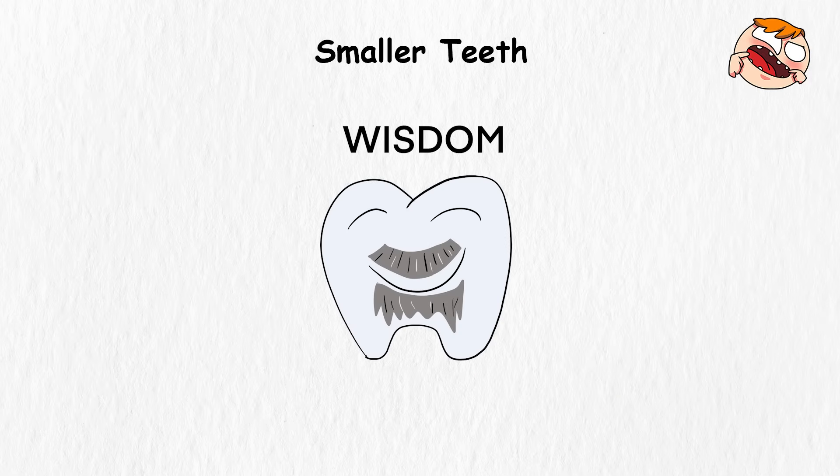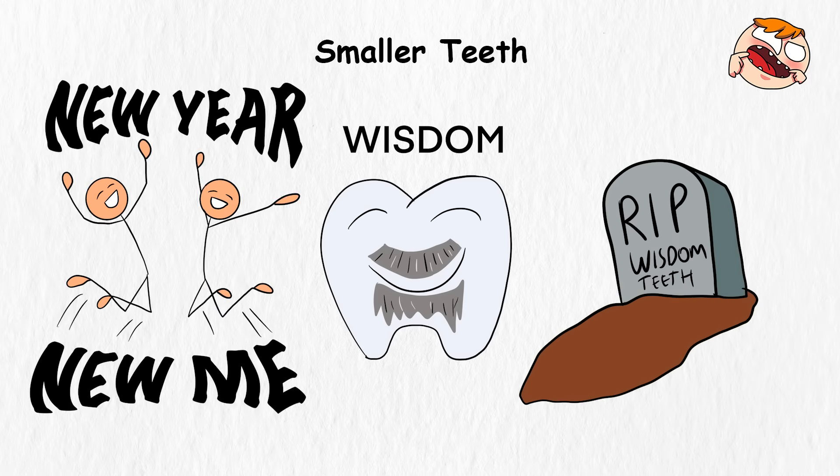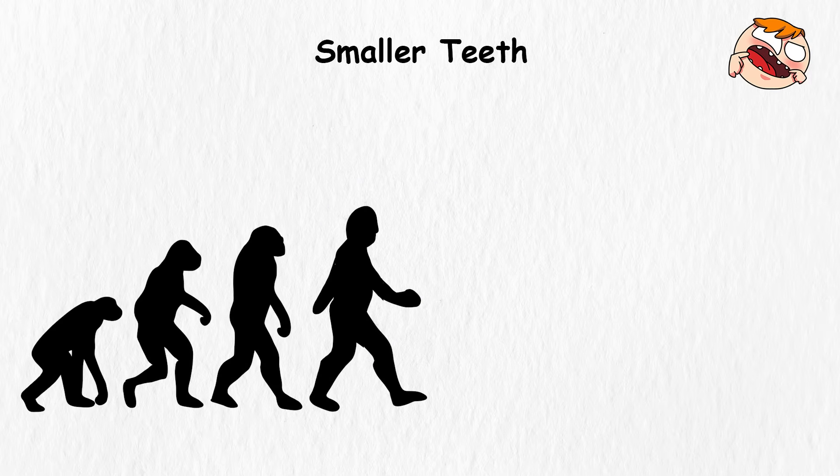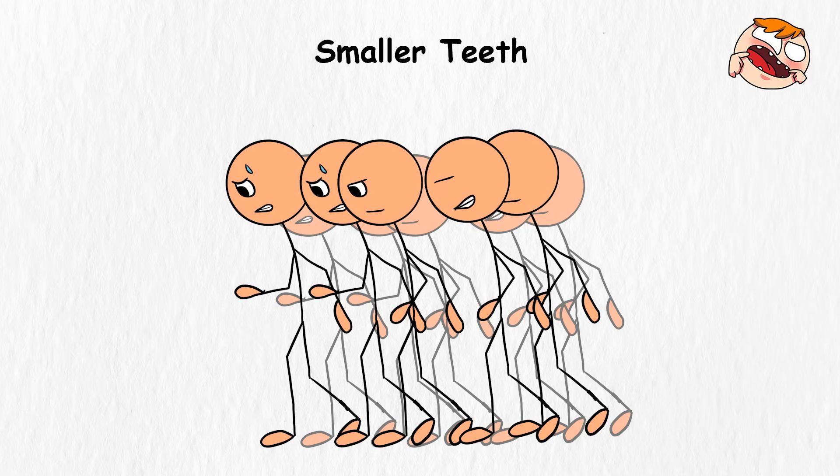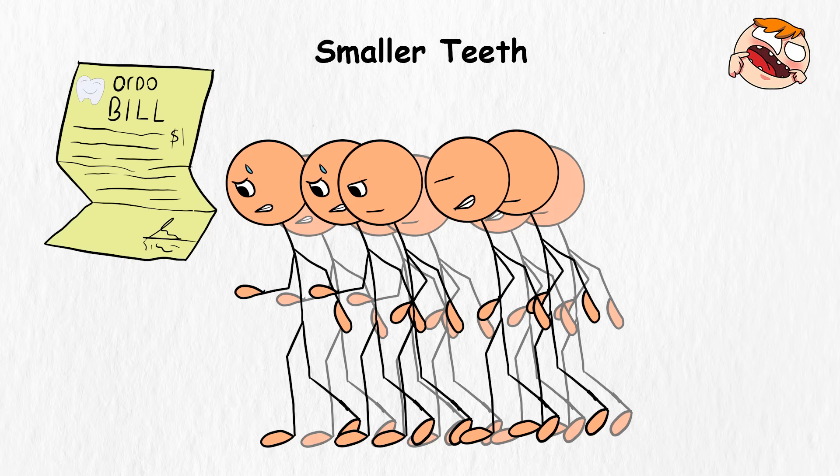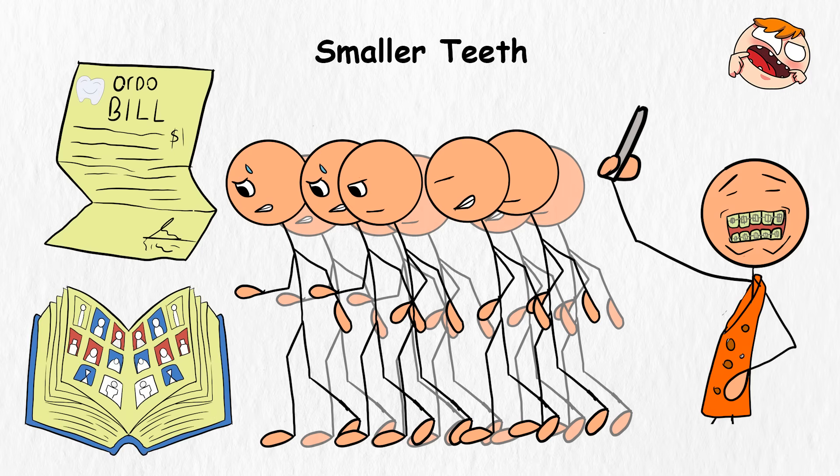Take the wisdom teeth, for example. The poor guy is gradually going into extinction faster than your New Year's resolutions. The silver lining in this evolutionary moment, though, is that smaller teeth might actually make us better. It would mean less overcrowding, fewer orthodontic bills, and fewer braces selfies in high school yearbooks.